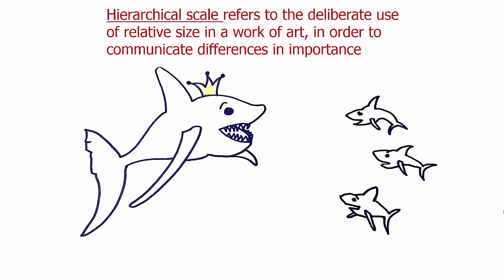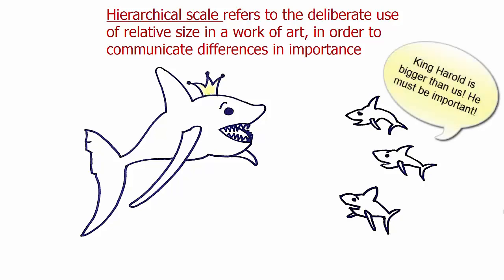Hierarchical scale is when an artist makes something large in order to show relative importance. This is an intentional decision. While Harold was larger than Angela in the last slide, it is not an example of hierarchical scale because Angela is just naturally a much smaller fish. However, in this case, Harold is hosting a meeting with an important shark committee and the artist has drawn him much larger than all of his other subjects. The difference in size is not natural, as all of the sharks would be about the same size. The size difference prompts us to note that King Harold is the important character in this scenario.